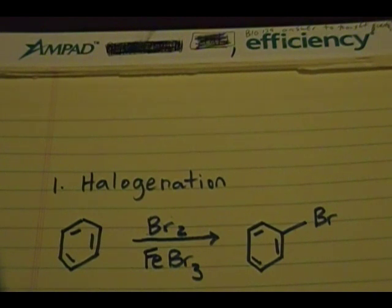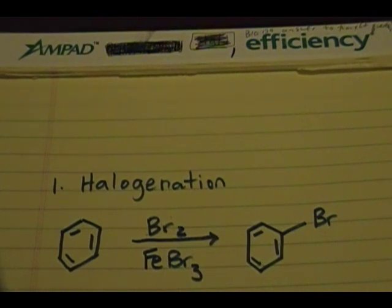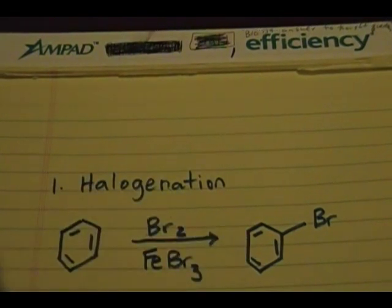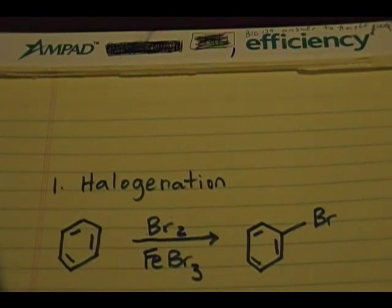Hello everybody. For this topic of the video I'll be talking about electrophilic aromatic substitution, and there are five reactions that I'll be discussing. These electrophilic aromatic substitution reactions are basically just substituting a hydrogen on an aromatic ring — for example, in the halogenation reaction, for bromine. The first one I'll cover is halogenation, and I'll be showing the mechanism for three out of the five reactions.